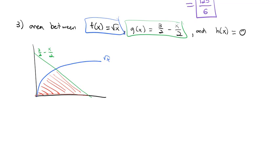We're finding the area of this shape. The bottom is not another function — it's just 0, so we don't need to subtract anything off. But we notice there are really two different parts to the function. The left part is under the square root of x, and the right part is under the linear equation 3 halves minus x over 2. We're going to need a separate integral for both halves.